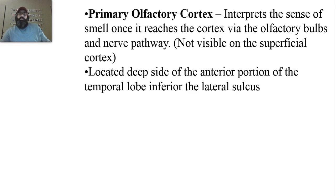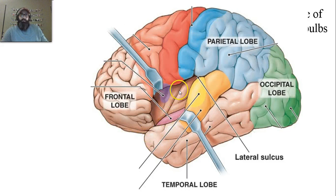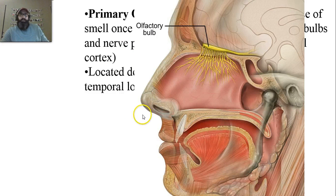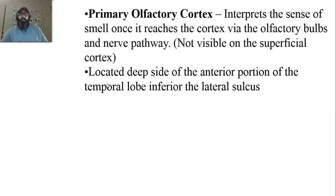The next cortex is called the primary olfactory cortex, associated with the sense of smell. Once your olfactory bulbs receive all the signals from the neurons of the nose, they're sent through a nerve pathway — not visible on the superficial cortex — but the olfactory bulbs extend down into the brain to the primary olfactory cortex, located on the deep side of the anterior portion of the temporal lobe, just below the lateral sulcus. Here you can see the neurons running into the olfactory bulbs, which then run into the brain to the actual olfactory cortex.